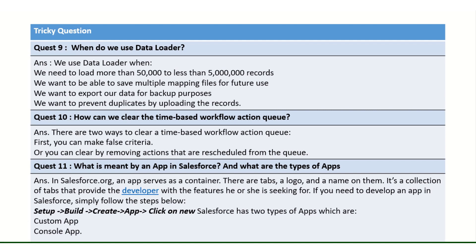Another advantage of the Data Loader: if you want to perform an operation multiple times, you can save the field mapping once and reuse it. When you insert or update records, you select the mapping between your Excel file and the Salesforce object. Once mapped, you save that mapping file and whenever you repeat the activity you just select it and proceed directly to the DML operation.